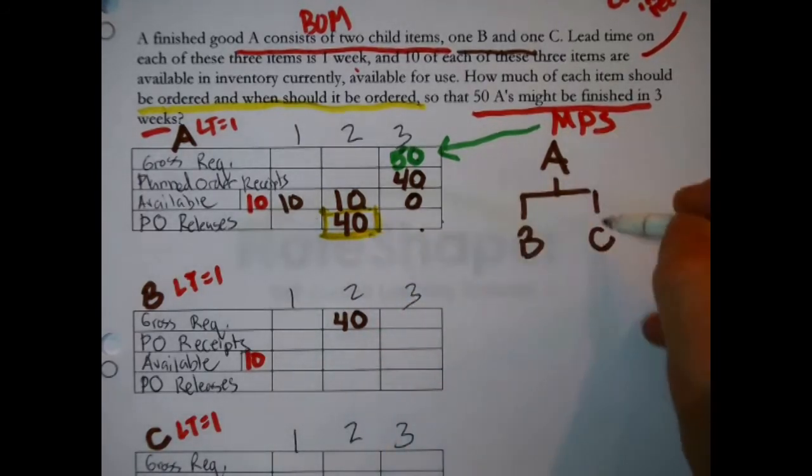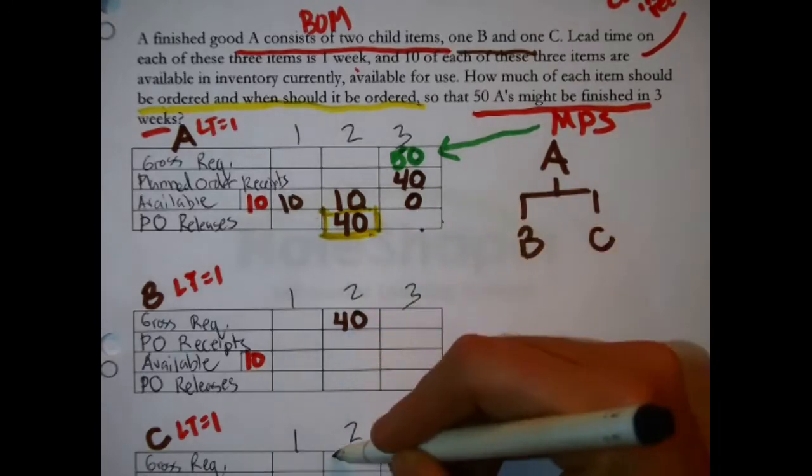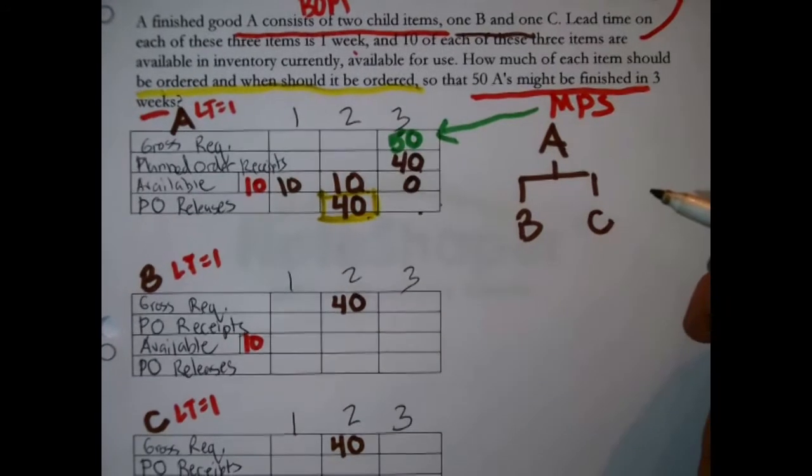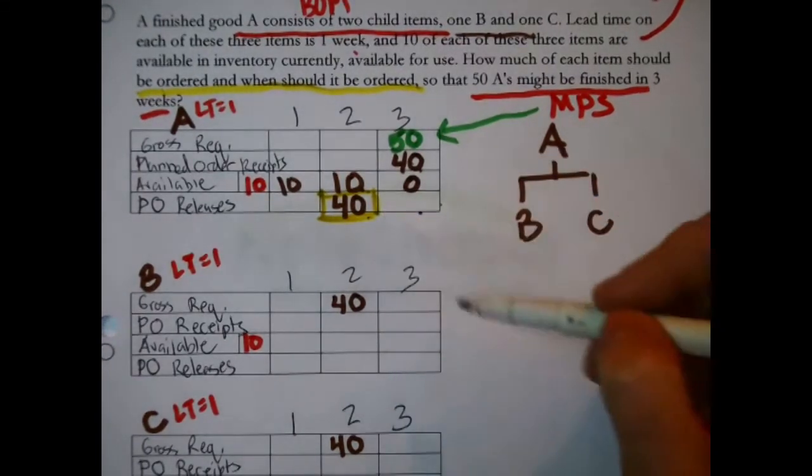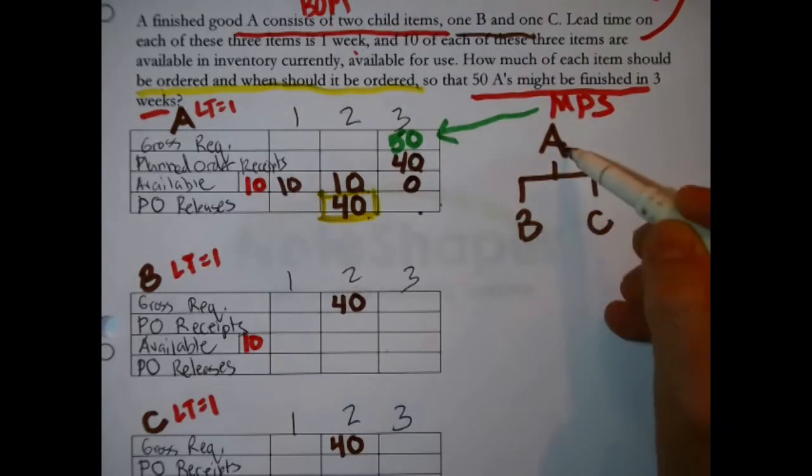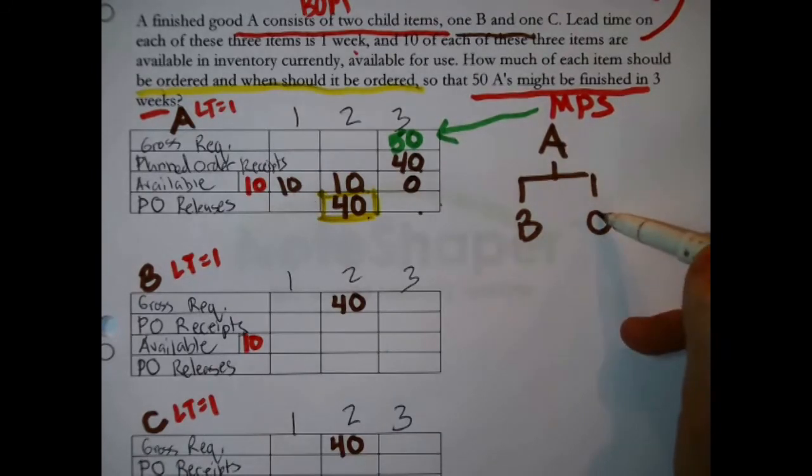And then actually this same forty, C is also a child, so this same forty goes into the top line of C's record as well. Once the planned order releases of the parent are passed down to the gross requirements line of the child records, what's the next step? Fill out all the records on the next level.